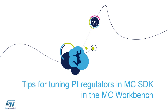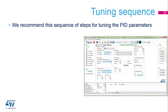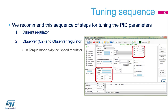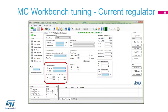Now let's look at the PI regulator tuning. We recommend a sequence of steps for tuning the PI parameters: starting with the current regulator, then the observer and observer regulator, the speed regulator, and others. Let's begin with the current regulator.